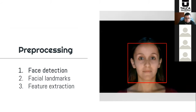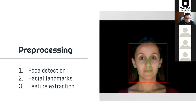We pre-processed the images of these datasets following these steps. First, we detected faces on images using the cascade classifier method from the OpenCV library. Then we marked facial landmark points using a pre-trained model from the dlib library, which estimates the location of 68 coordinates that map regions of the face such as eyes, mouth, and so on.